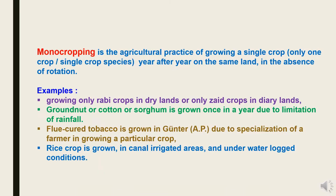Monocropping is the agricultural practice of growing a single crop — only one crop of the same species — year after year on the same land in the absence of rotation. Examples include growing only Rabi crops in dry lands or only Jayad crops in Diyara lands, groundnut, cotton, or sorghum cultivation once a year due to limitation of rainfall, or flue-cured tobacco grown in Guntur, Andhra Pradesh, due to farmer specialization. Rice is grown in canal-irrigated areas and waterlogged conditions because other crops cannot be grown.